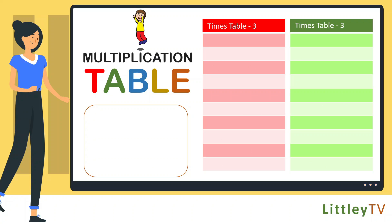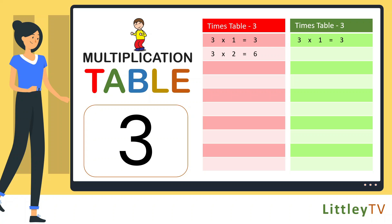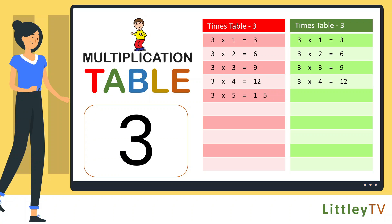Table of 3. 3 ones are 3, 3 twos are 6, 3 threes are 9, 3 fours are 12, 3 fives are 15.